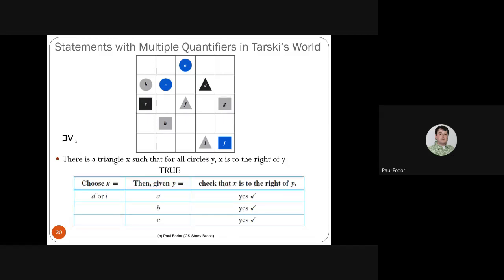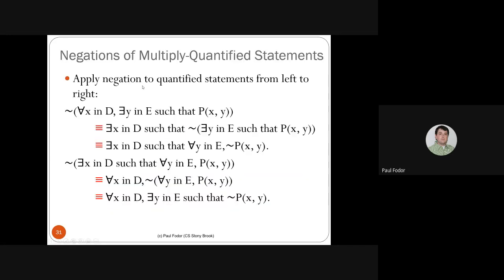Now swapping the quantifiers: 'there exists a triangle X such that for all circles Y, X is to the right of Y.' We can choose triangle D — D is to the right of circles A, B, and C. So this existential-universal statement is also true. We choose D such that for all circles, D is to the right.